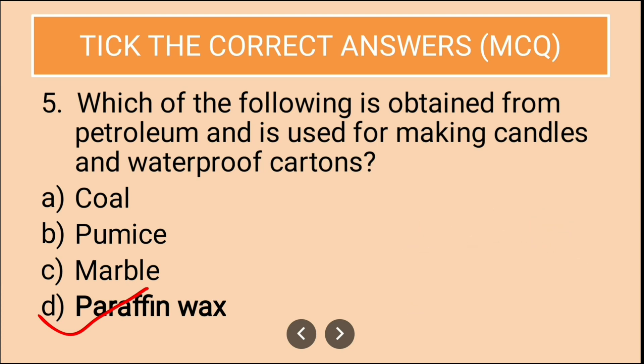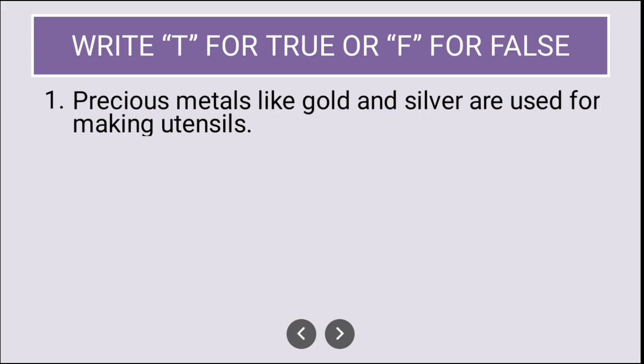True or False: Precious metals like gold and silver are used for making utensils — is it true? It is false. Precious metals like gold and silver are not used for making utensils.